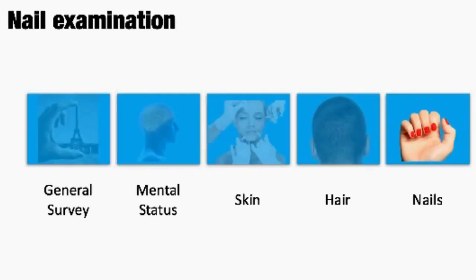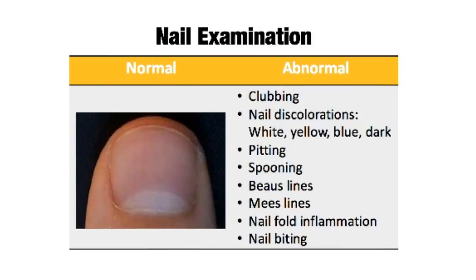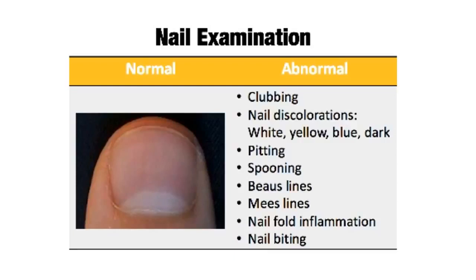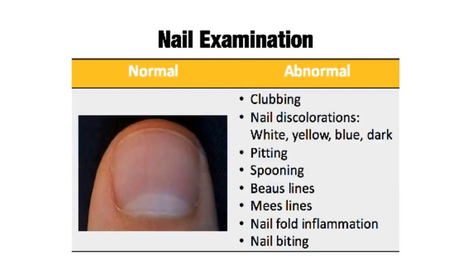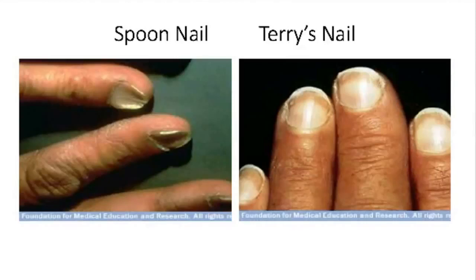Looking at the nail examination: we probably all know what normal nails look like. Abnormal findings include clubbing, nail discolorations — white, yellow, blue, dark. If you notice abnormal skin lesions under or around the fingernails, make sure you get those checked out — I have a friend with a family member currently undergoing cancer treatment for a malignancy that originated from a skin lesion underneath the fingernail. Other findings include pitting, spooning, Beau's lines, Muehrcke's lines, and Terry's nails. Here is a classic picture of spoon nail — koilonychia — associated with iron deficiency anemia, sometimes hypothyroid disease, heart disease, and hemochromatosis.